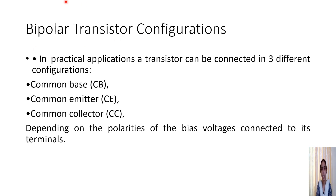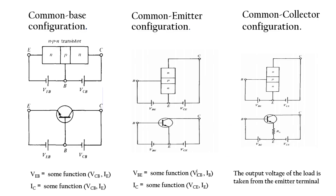The transistor configurations for the microwave bipolar transistor are the same as for ordinary transistors: common base, common emitter, and common collector, depending upon the polarity of the bias voltage connected to its terminals. The configurations of the microwave transistor are the same as what we have learned from the ordinary transistor.